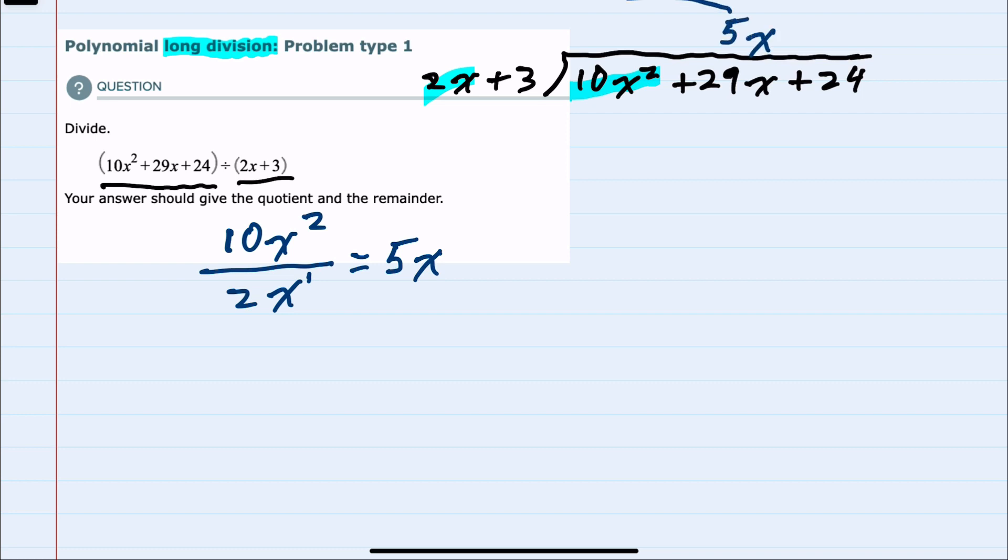And then from here, I would multiply. 5x times 2x gives me 10x squared. 5x times 3 gives me 15x. And then I would subtract, just as in regular long division. Since I'm subtracting, I'm going to change each of these signs on the terms and then add. By design here, our first term should cancel.